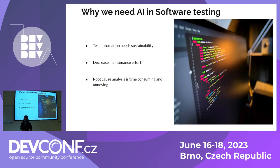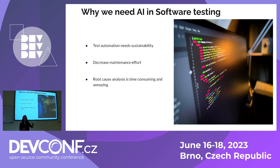AI automation needs sustainability — your automation script needs to be sustainable, maintained, refactored, and given the same attention as business-related code. Decreasing maintenance effort is important because maintenance is time-consuming and costly. Root cause analysis is also time-consuming and annoying. If your test cases are running in a CI pipeline and 50% of them are failing due to the same reason, you shouldn't need to invest time fixing the same failure across so many test cases. These are the challenges we face in software testing without implementing AI.